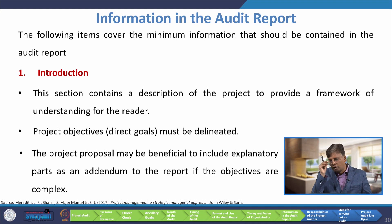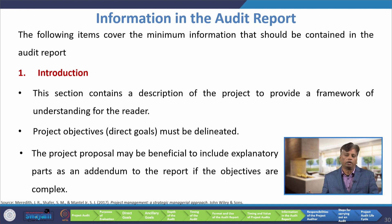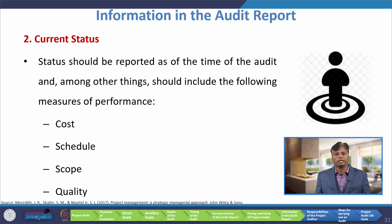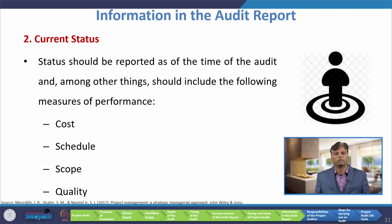Now we will discuss about some of the information in the audit report. The following items cover the minimum information that should be contained in the audit report. First is the introduction — this section contains a description of the project to provide a framework of understanding for the reader. Project objectives must be delineated. The project proposal may be beneficial to include as an addendum to the report if the objectives are complex. The second item is current status — status should be reported as of the time of the audit and should include measures of performance such as cost, schedule, scope, and quality.